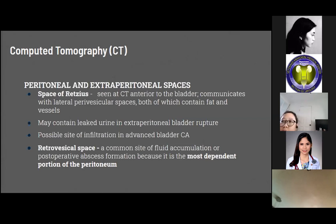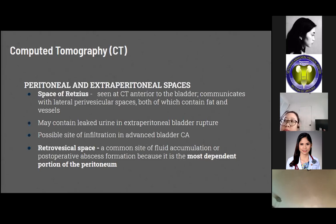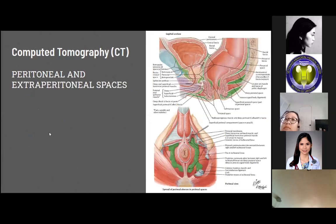The peritoneal and extraperitoneal spaces are important to know when interpreting CT of the male pelvis. The space of Retzius is seen on CT anterior to the bladder and communicates with lateral perivesicular spaces, both containing adipose tissue and vessels. Leaked urine may accumulate in these spaces in extraperitoneal bladder rupture, and it is a possible site of infiltration in advanced bladder cancer. The retrovesical space is a common site of fluid accumulation or postoperative abscess formation, as it is the most dependent portion of the peritoneum.